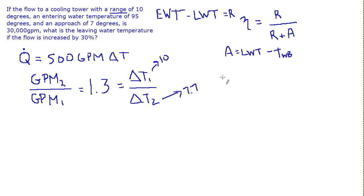So let's write that out. That might be useful. So we might use it in this form, or we might use it as entering minus leaving over entering minus wet bulb. It's useful to be able to be flexible in the ways that you can think about it, but this is a good one.